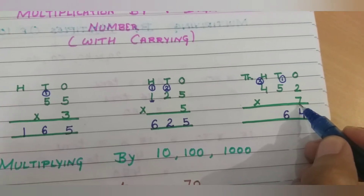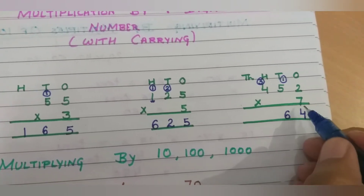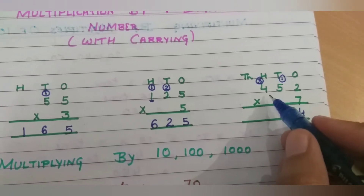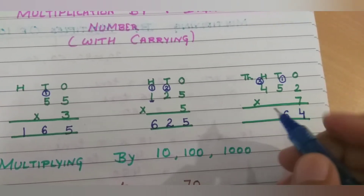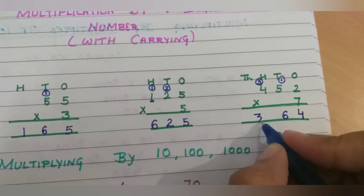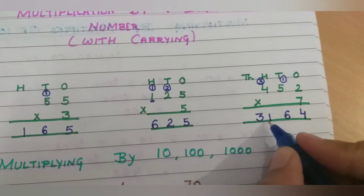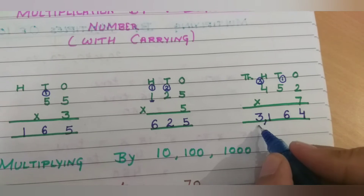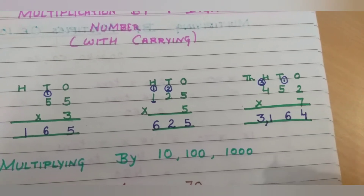Next we multiply the hundreds. Seven fours are twenty-eight. Twenty-eight plus three is thirty-one. What we got? Three thousand one hundred sixty-four.